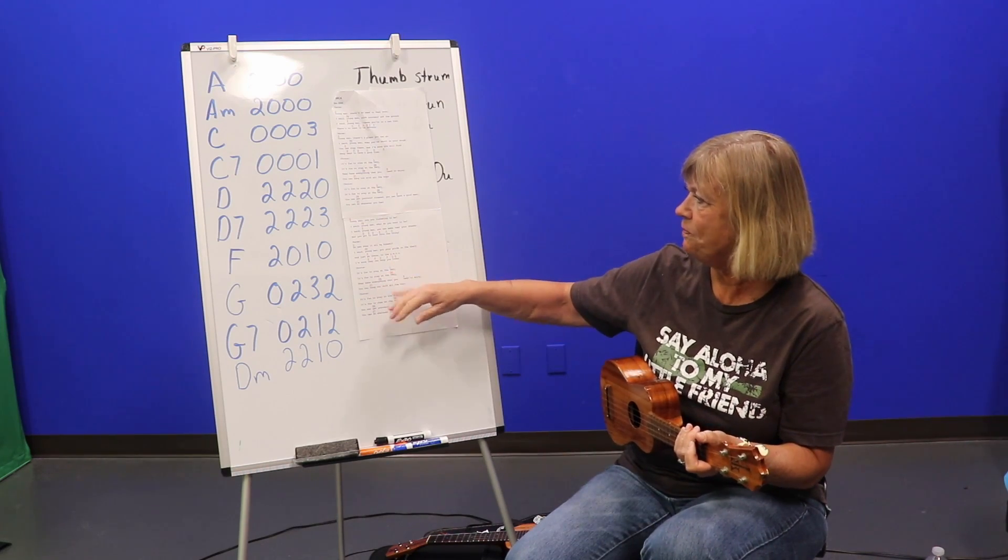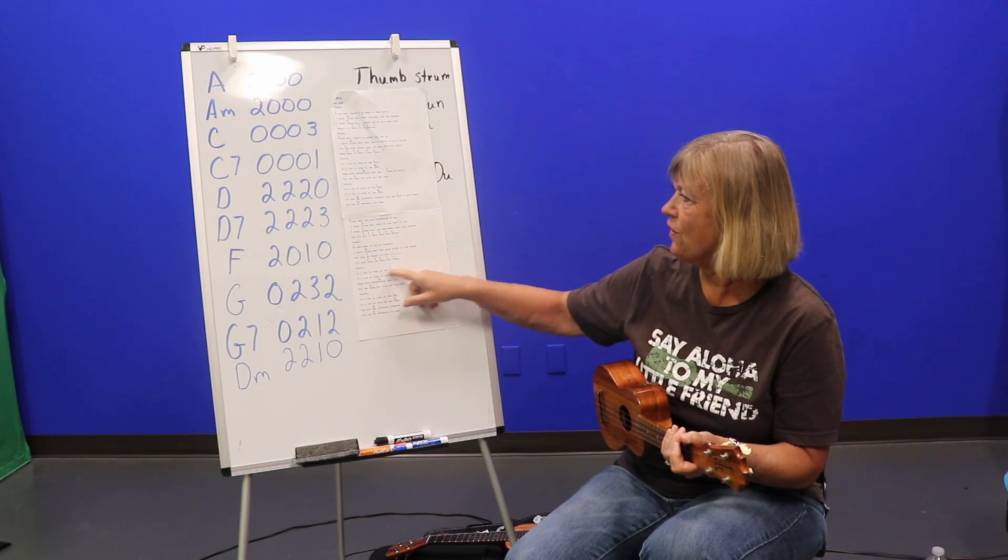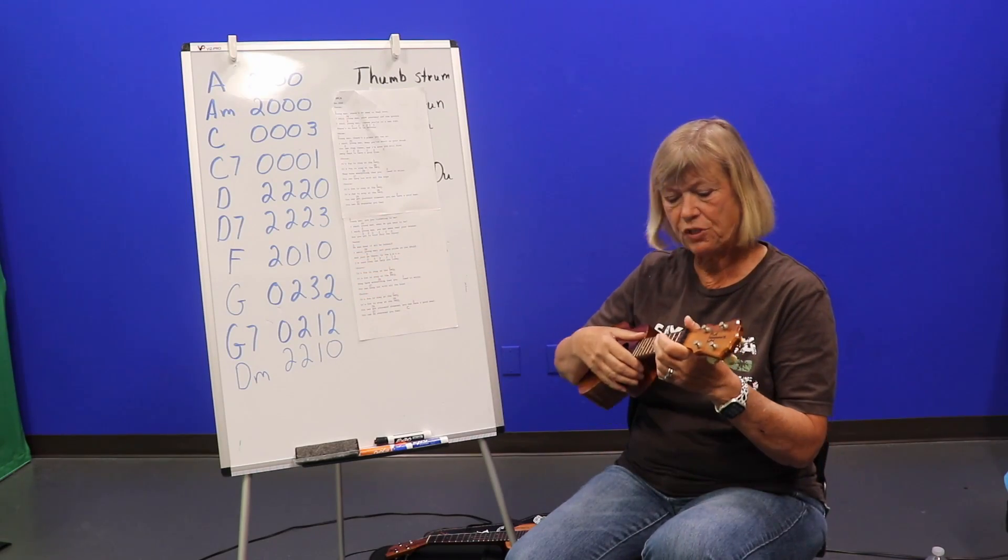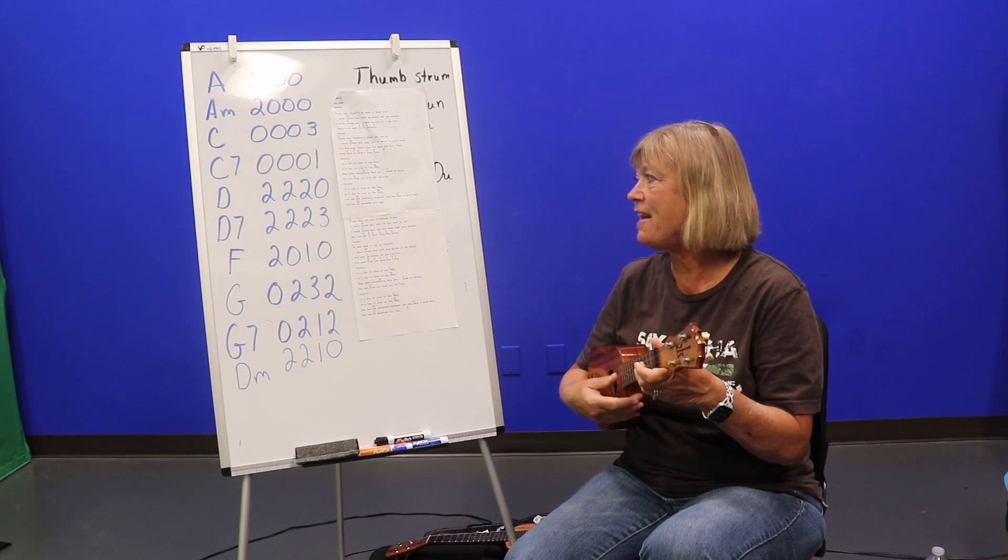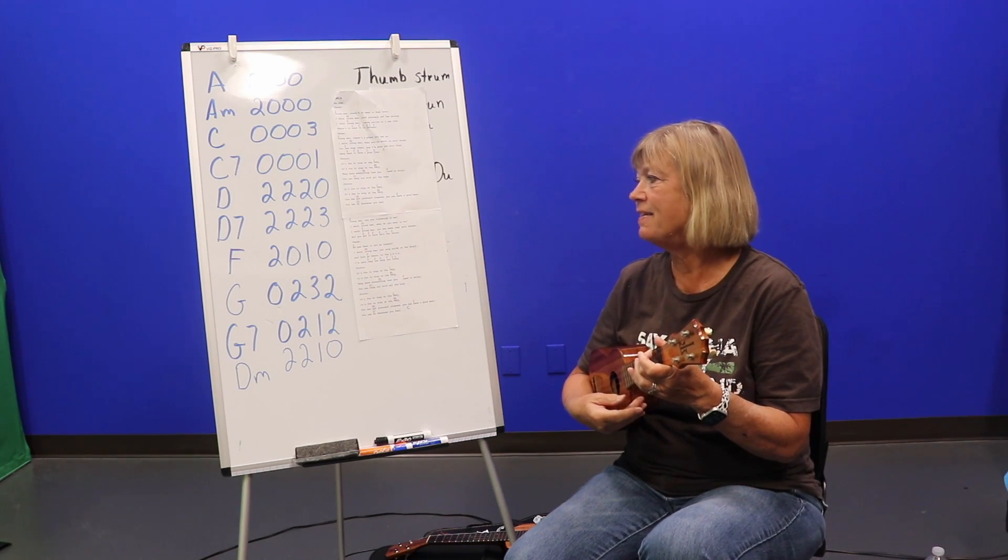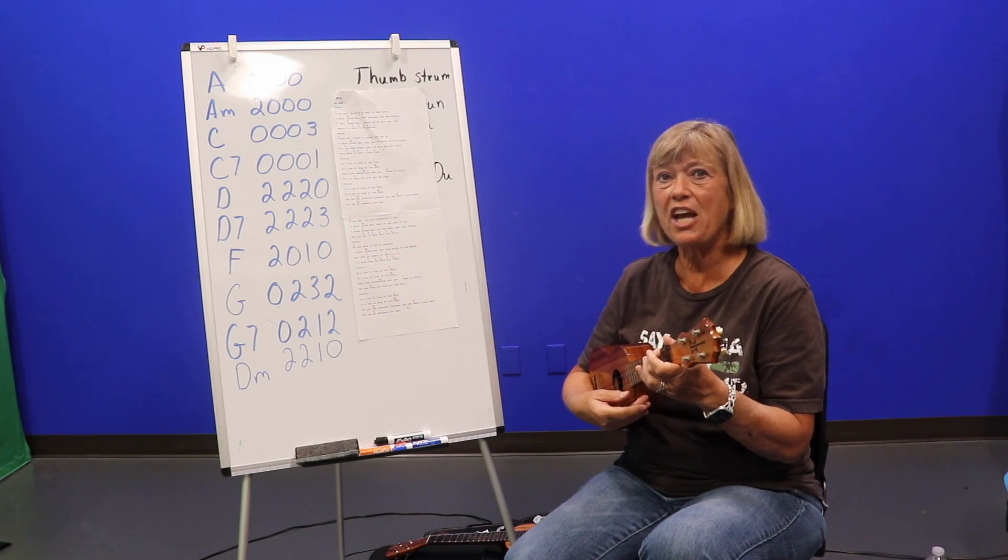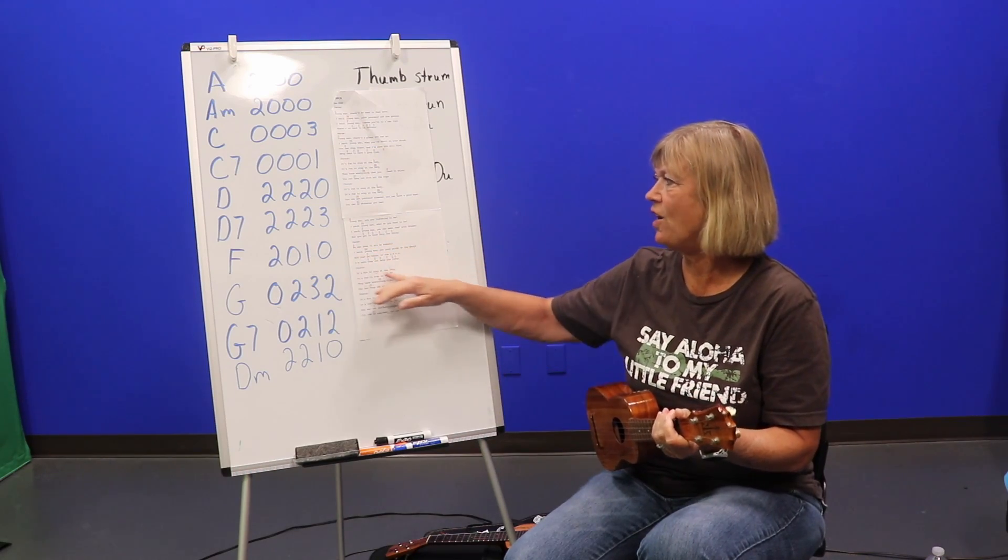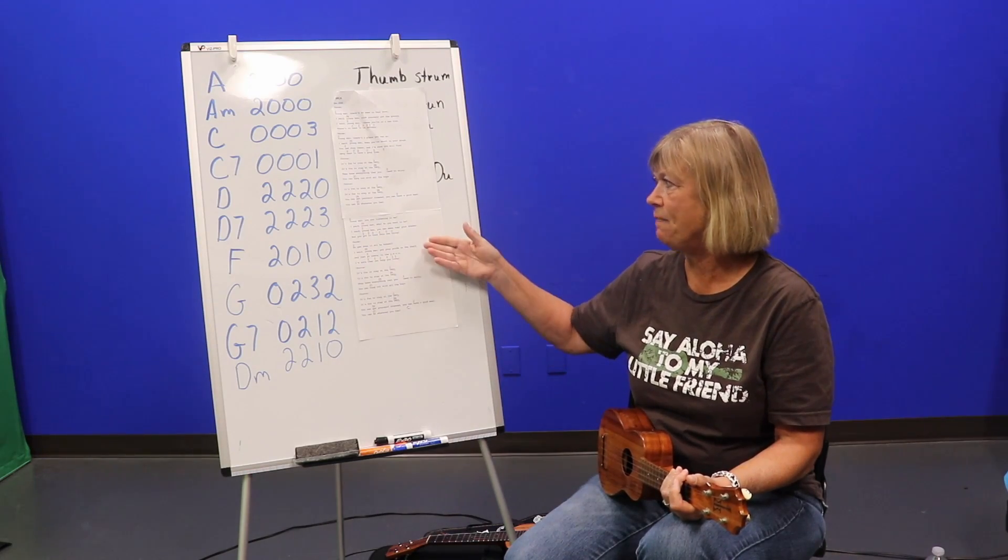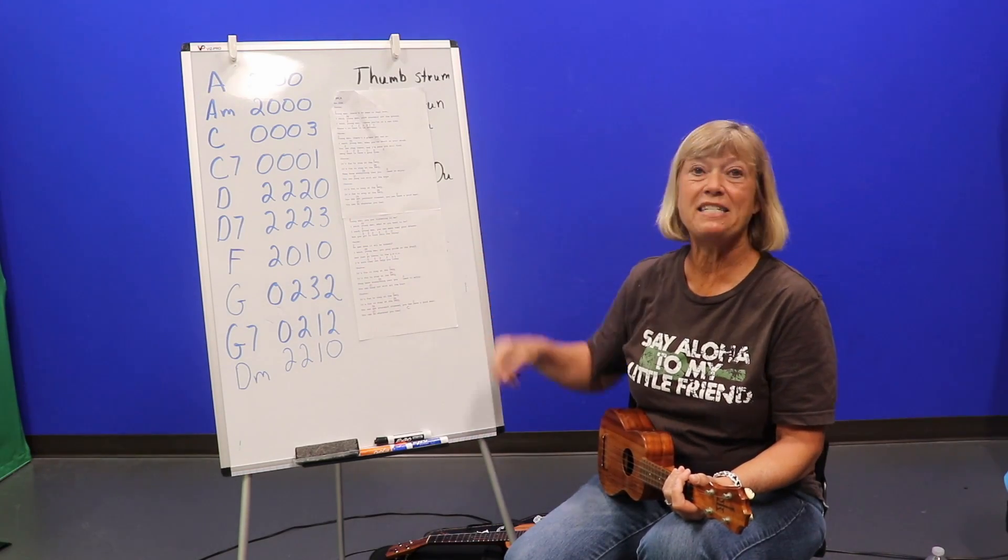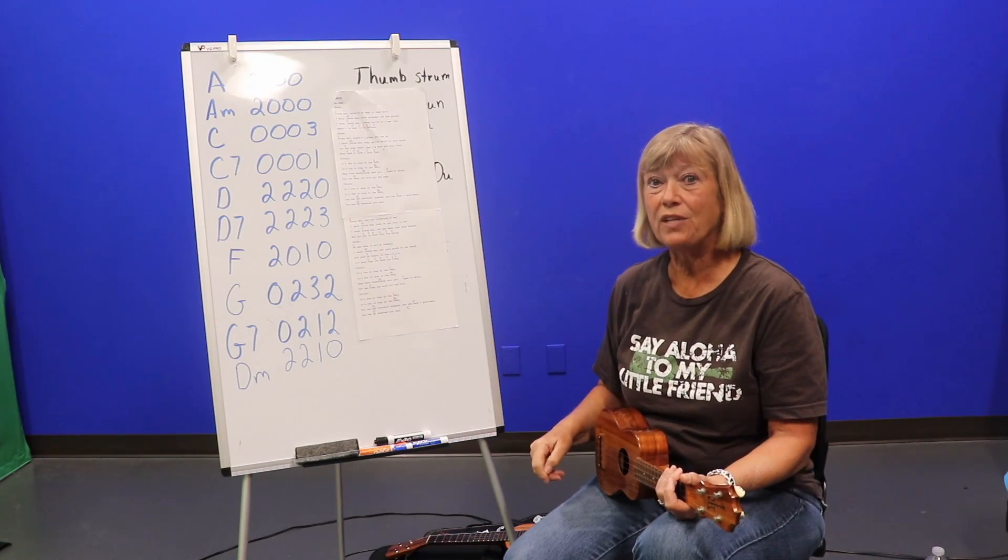And when you get to the end on this verse, it's always kind of fun to just kind of go slow. No man does it all by himself. I said, young man, put your pride on the shelf. So when you get to the part on that song, when the Village People did it, that they kind of slowed it down and tried to build up emphasis. That's a good place to add a thumb strum or to slow things down.